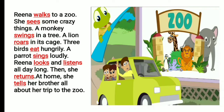Dear students, on the screen you can see some underlined words. I will read the story again. Please try to understand these words. Reena walks to a zoo. She sees some crazy things. A monkey swings in a tree. A lion roars in its cage. Three birds eat hungrily. A parrot sings loudly. Reena looks and listens all day long. Then, she returns. At home, she tells her brother all about her trip to the zoo.